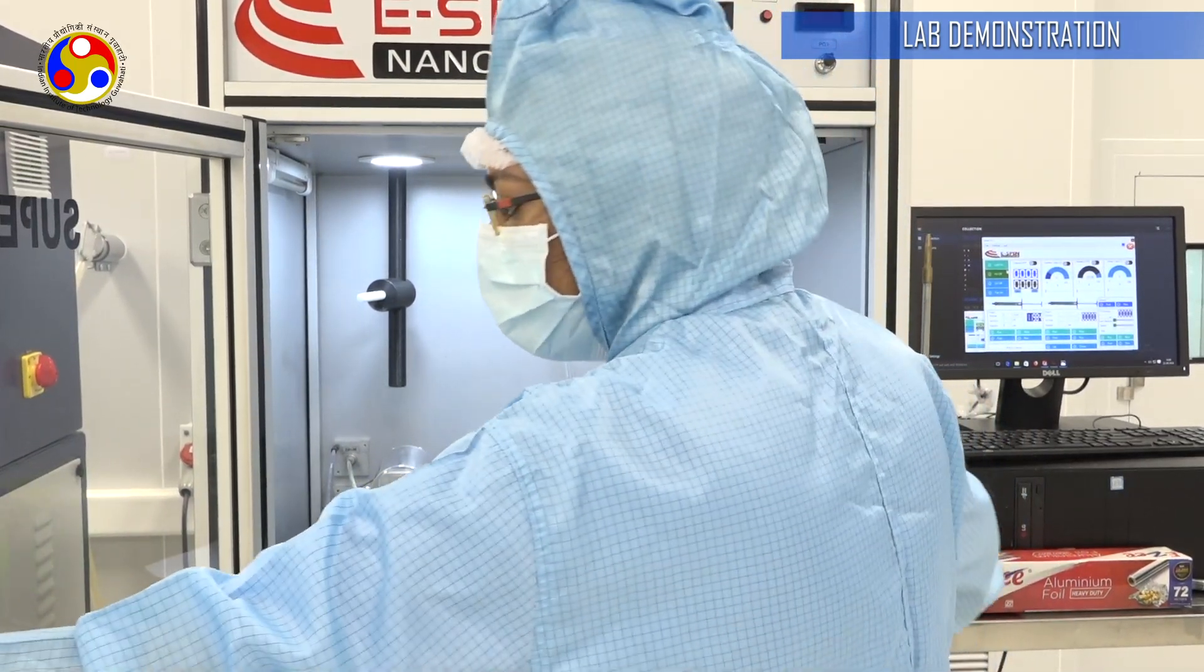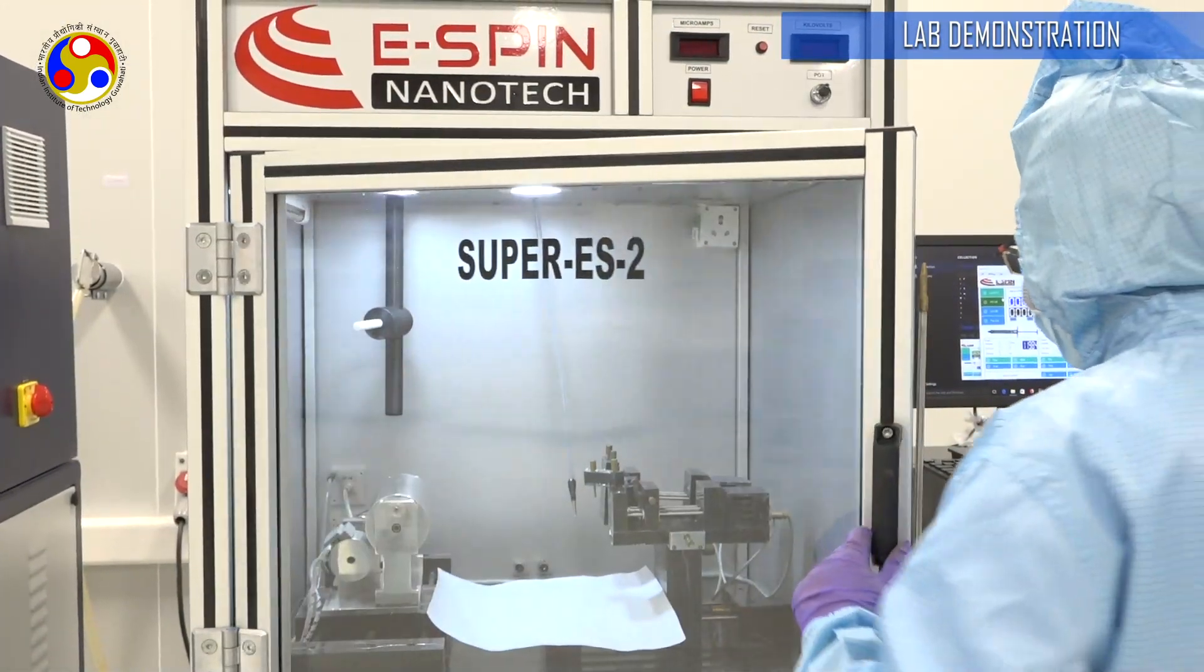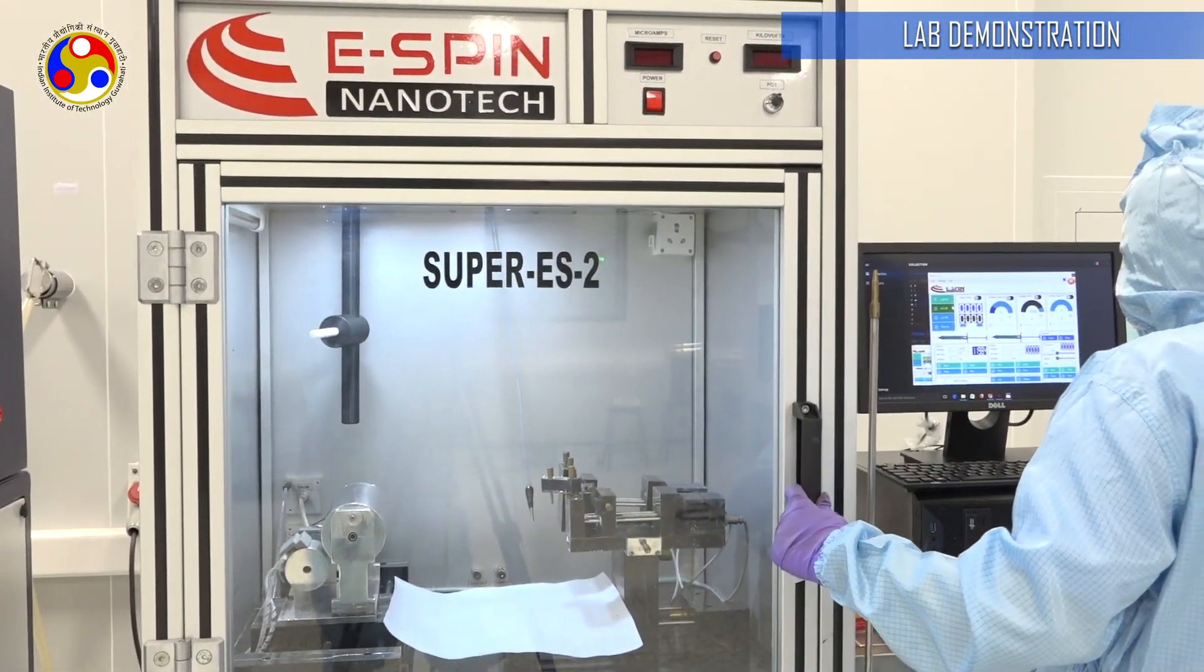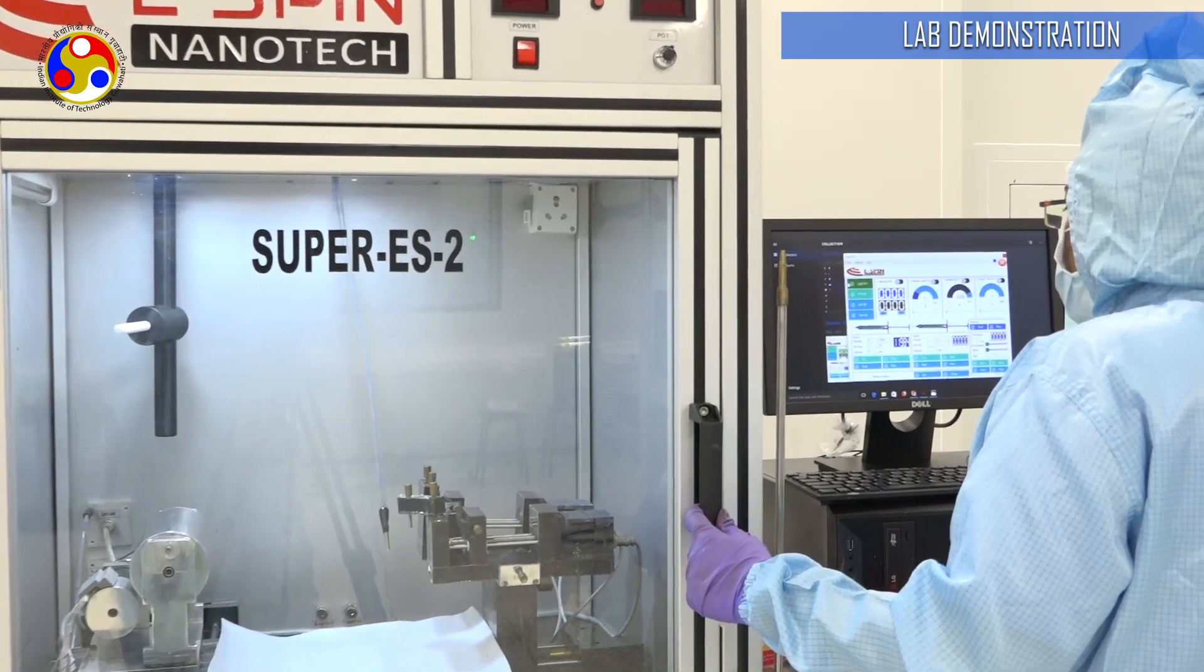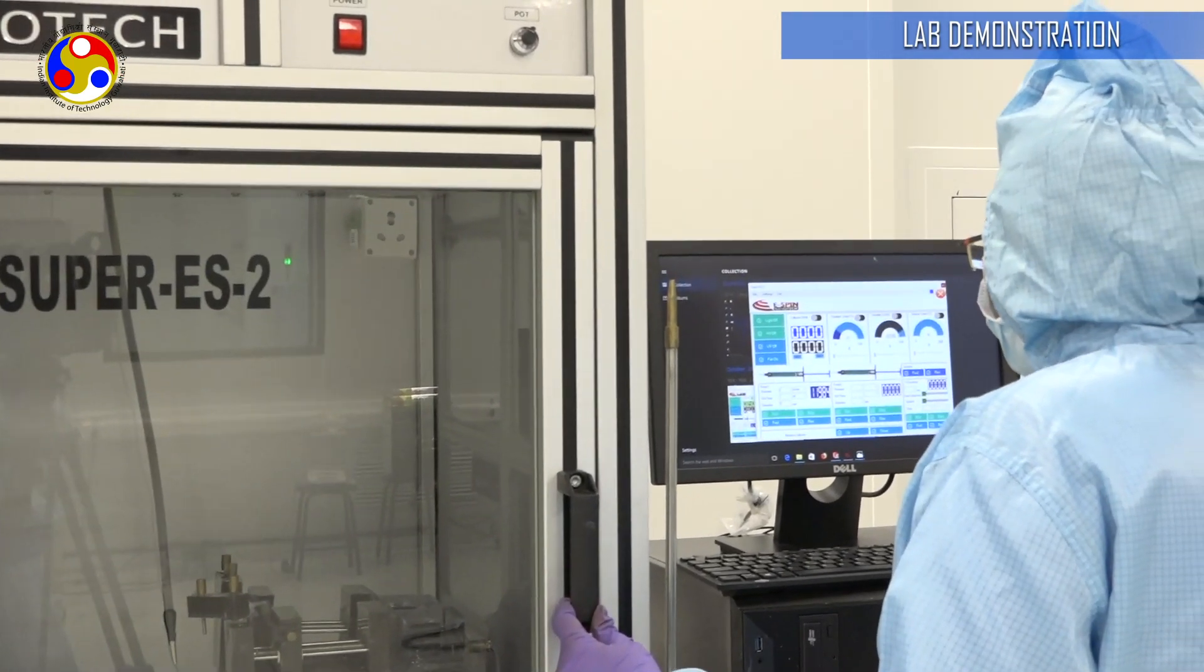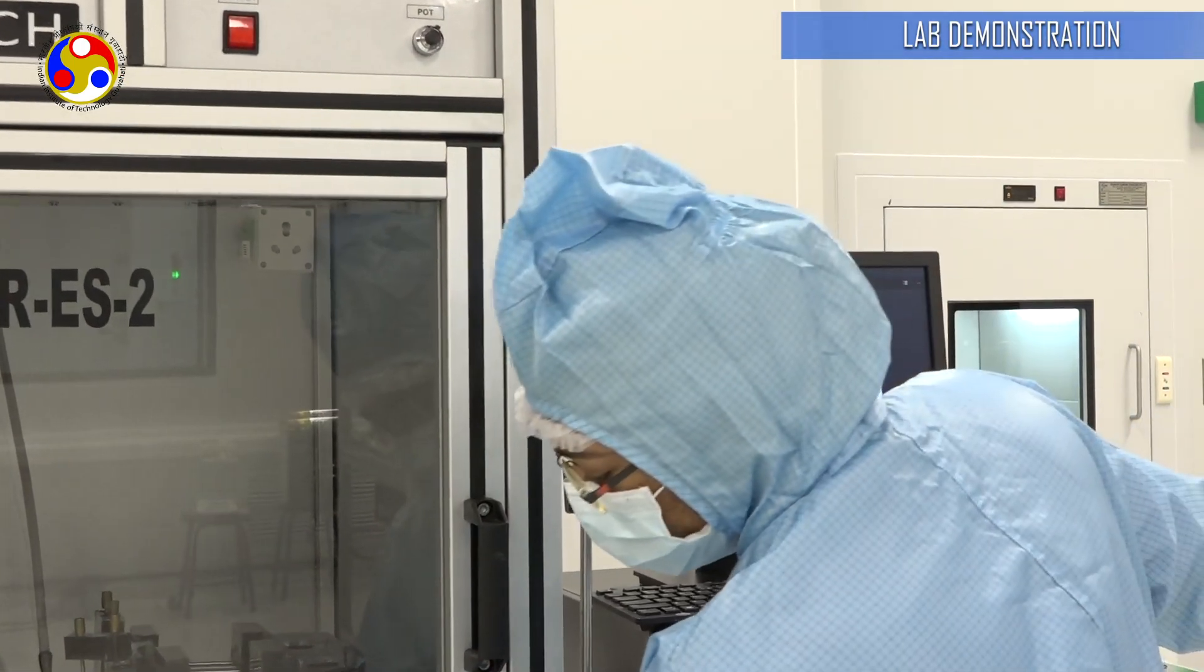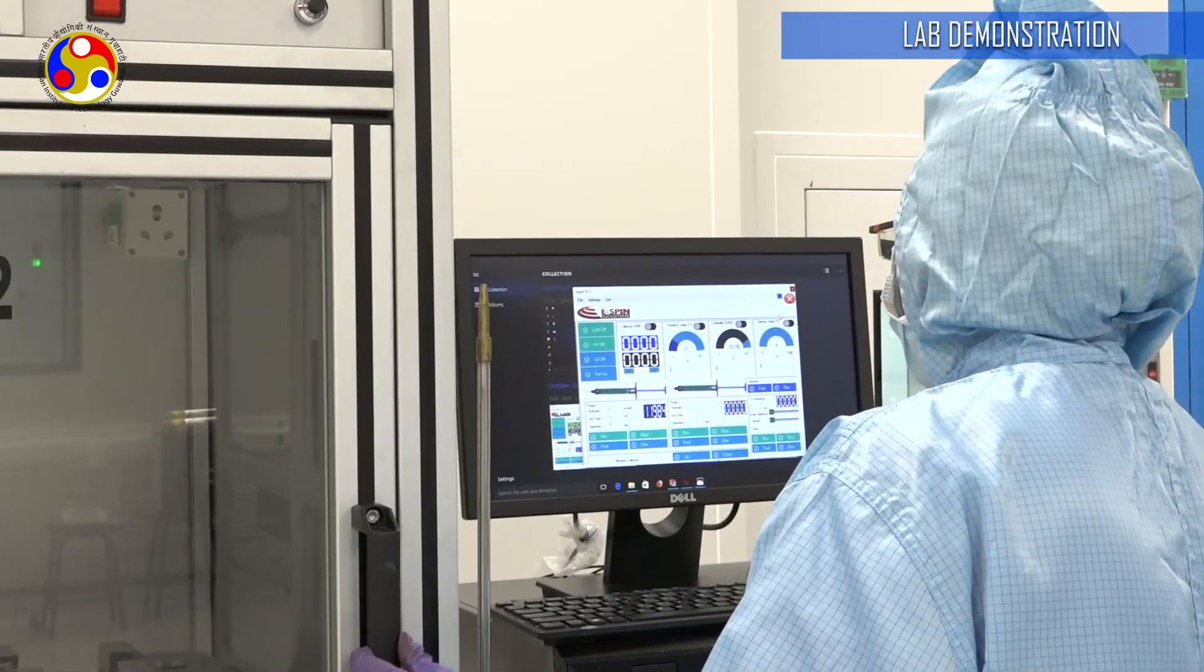We are mostly done here. I am just going to turn the light off and then power it off. That's a complete demo of the electrospinning process.